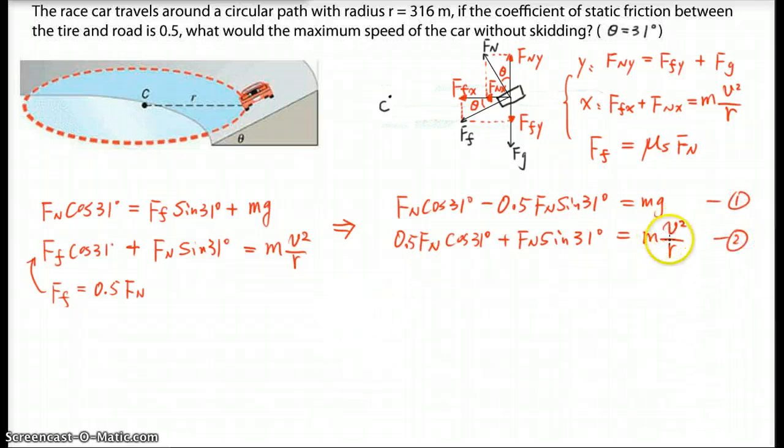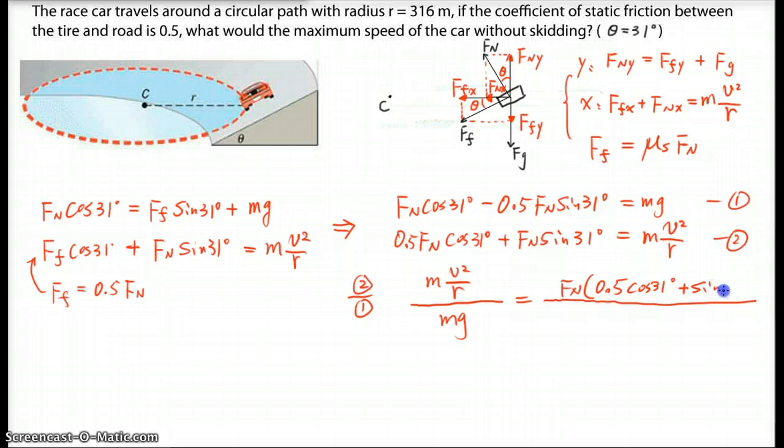Because we're trying to find V, it would be a little bit easier to do equation 2 over equation 1. And then let's switch the two sides of both equations, so we should get M V squared over R divided by Mg. And on the other side, let's factor the Fn out, so inside would be 0.5 cos 31 degrees plus sine 31 degrees.